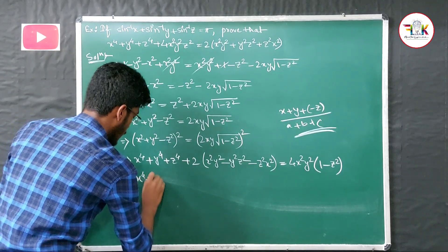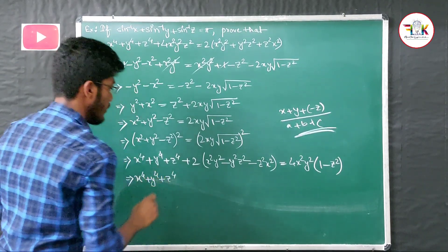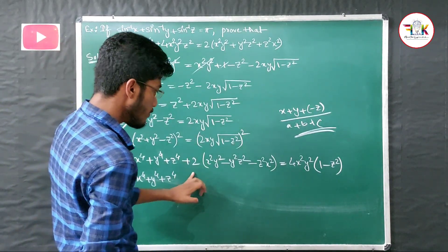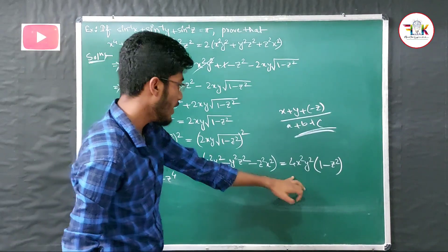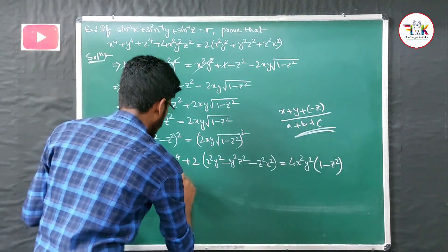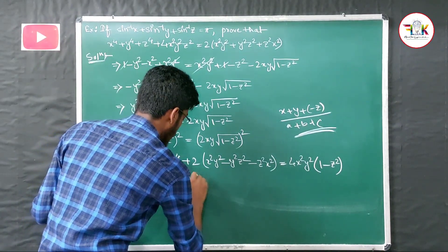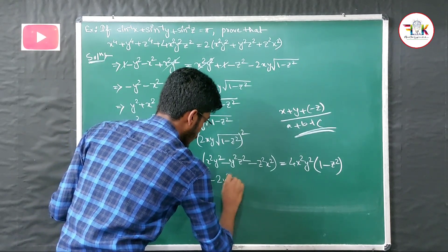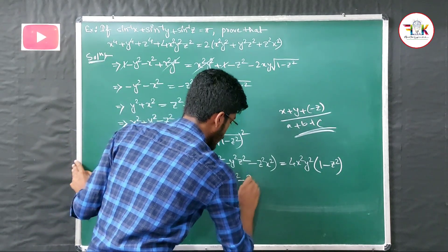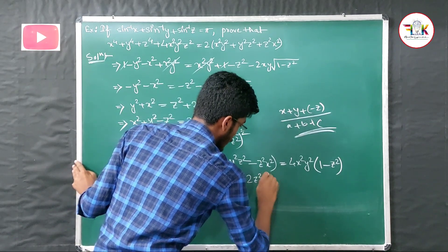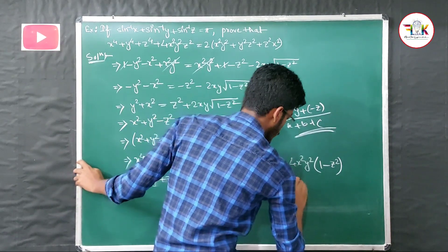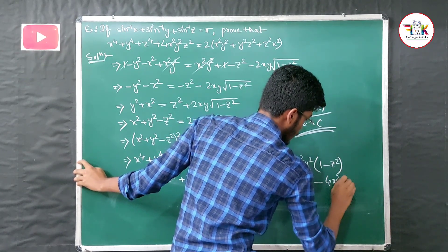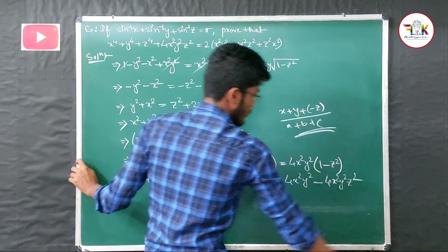So we have: x⁴ + y⁴ + z⁴ + 2x²y² - 2y²z² - 2z²x² = 4x²y² - 4x²y²z². Rearranging: x⁴ + y⁴ + z⁴ + 2x²y²z²·4 - 2y²z² - 2z²x² = 4x²y² - 2x²y², giving x⁴ + y⁴ + z⁴ + 4x²y²z² = 2(x²y² + y²z² + z²x²).